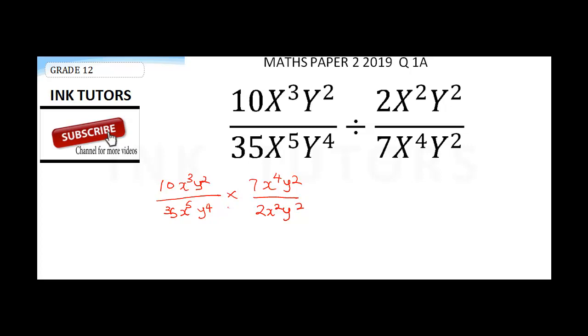Notice I could decide to start cancelling — my 7 can cancel 35, my 2 can cancel — but I don't want my work to be rough, so I want to represent everything in terms of indices.